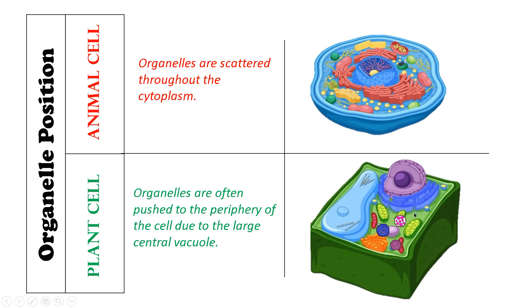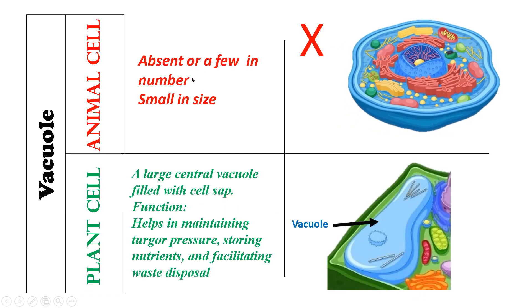This is due to the large central vacuole. Vacuoles are generally absent in animal cells, and in case they are present, their number will be very less and they will be very small in size.